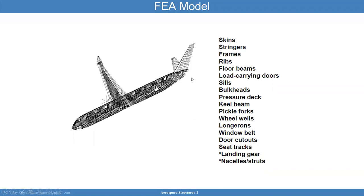Typically a symmetric model is useful. It will encompass the worst case conditions acting on the lift, the worst case condition acting on the wings, and the body of the aircraft. It's going to include the skins, stringers, frames, ribs, floor beams, and load carrying doors.